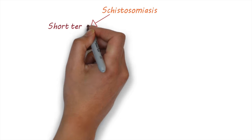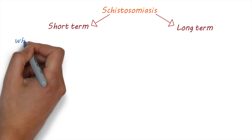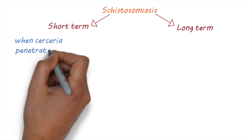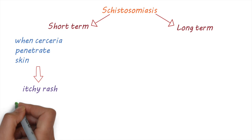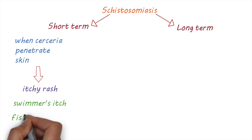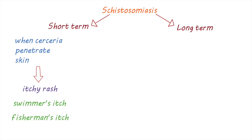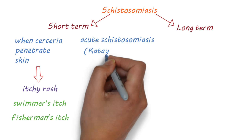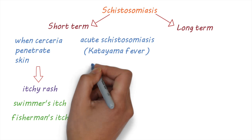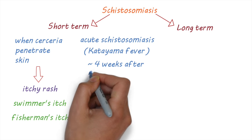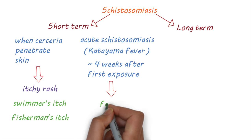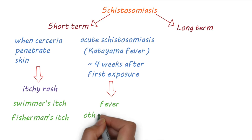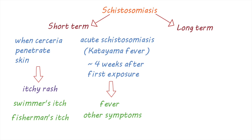Schistosomiasis can cause both short-term and long-term disease. When the cercariae penetrate the skin, some people develop an itchy rash called swimmer's itch or fisherman's itch. Some people can develop a syndrome called acute schistosomiasis, also called Katayama fever. This occurs about four weeks after being exposed to the parasites for the first time. It usually presents with a fever and a range of other symptoms such as diarrhea, rash, and respiratory symptoms. This is usually self-limiting.